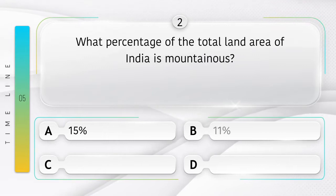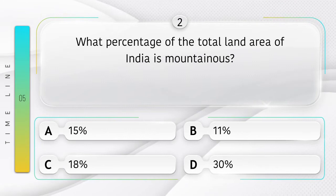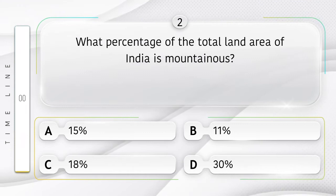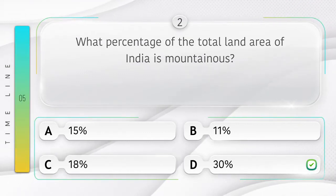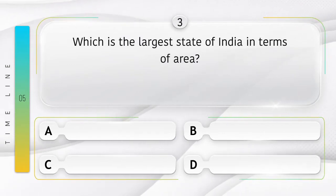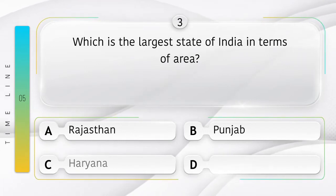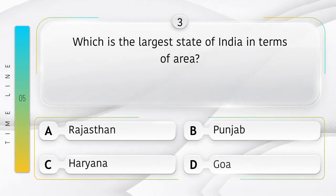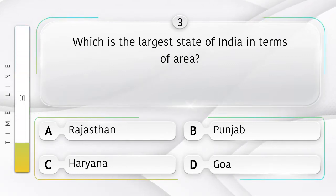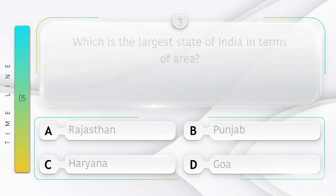What percentage of the total land area of India is mountainous? Option A: 15%, B: 11%, C: 18%, D: 30%. Answer is option D: 30%.